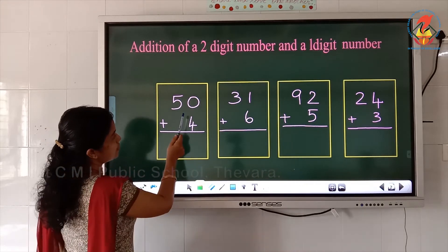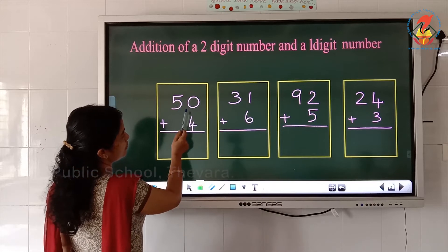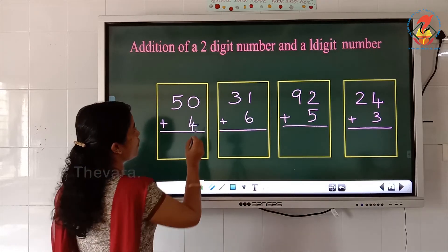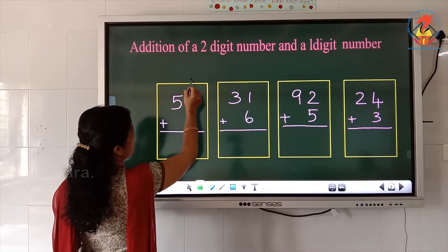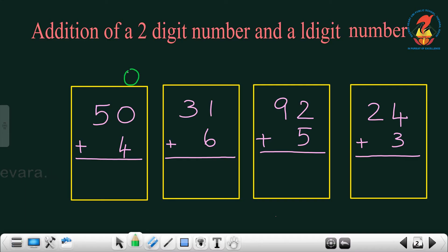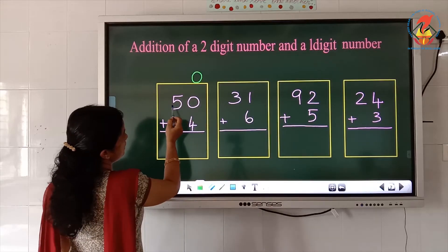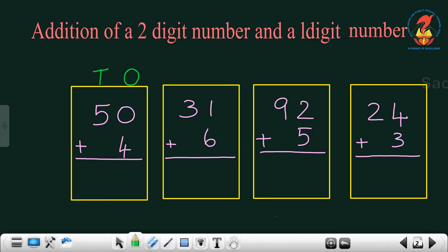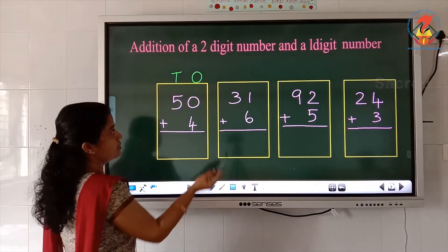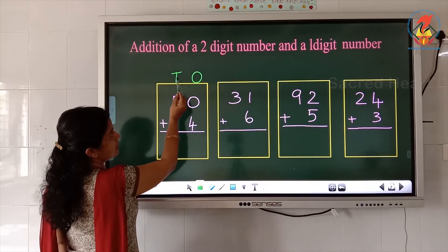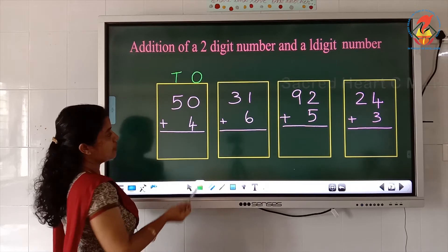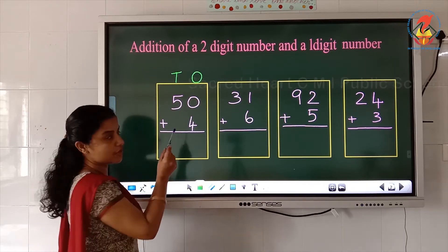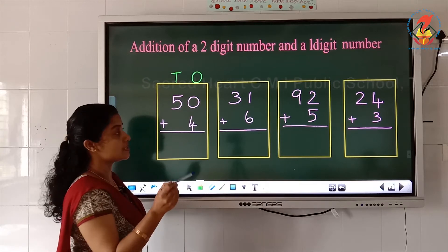Now look here children, here there are two digits: 1, 2. So what is this place value called? This is called the ones place. So we will write here O, and this is the tens place, so we will write here T. This is the ones place and this is the tens place. Now look here, is there any number here? There is no number. So we have to put 0.